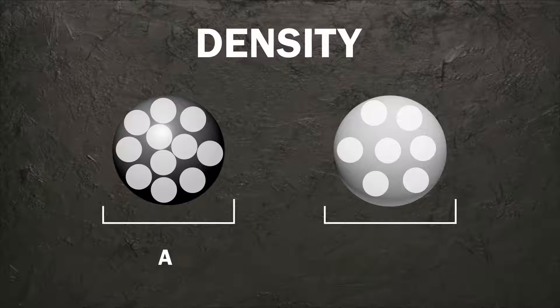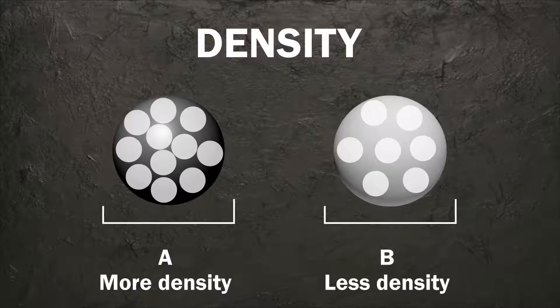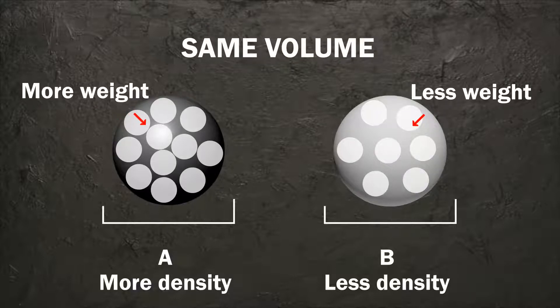If an object, let's call it A, has more density compared to another object, let's call it B, and we take the same volume of both, the weight of object A will be more compared to object B.